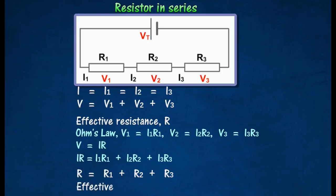The effective resistance R of the resistors in series is always higher than the resistance of any one of the resistors by itself.